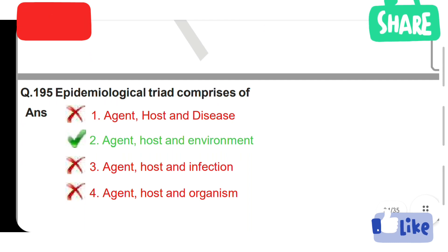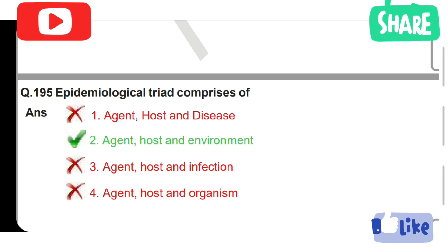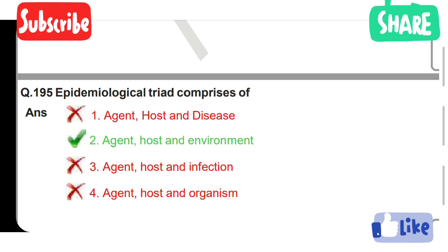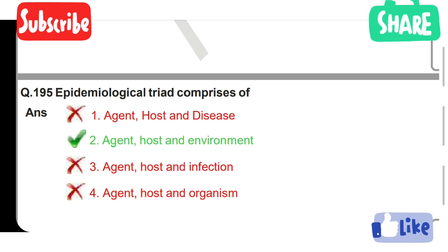Next question: Epidemiological triad comprises of — Option 1: Agent, host and disease. Option 2: Agent, host and environment. Option 3: Agent, host and infection. Option 4: Agent, host and organism. Option 2 is the correct answer — agent, host and environment.